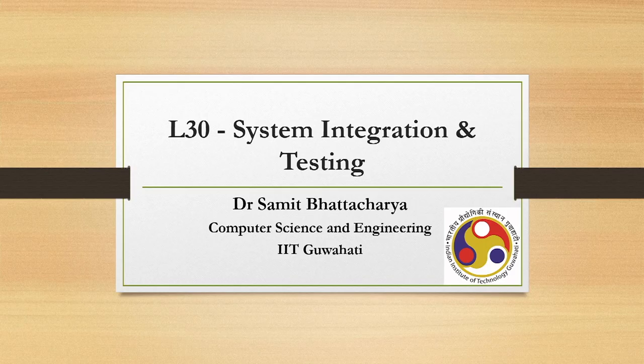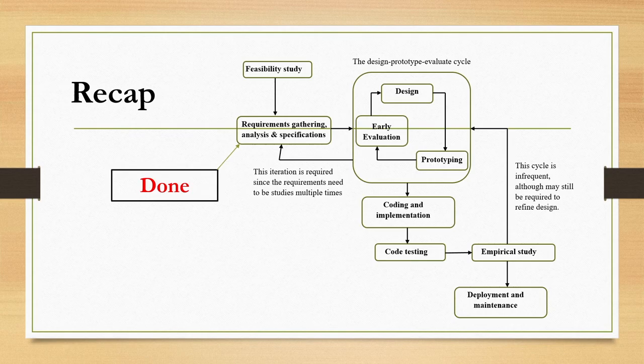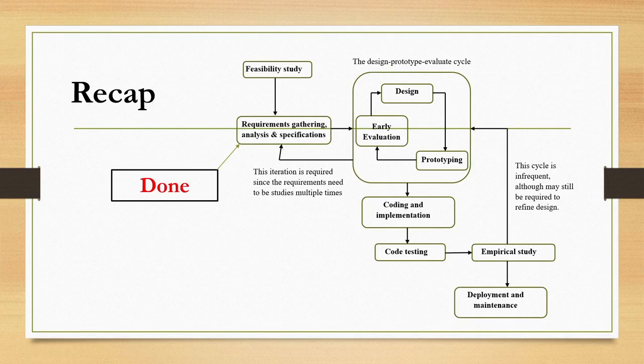As is the practice we follow before we start the lecture, let us quickly recap the things that we have learned and where we are currently. We are discussing the interactive system development life cycle. In this life cycle there are several stages, and we are currently covering the implementation stage. We have covered requirement gathering, analysis and specification stage, and the outcome of that stage is the SRS document.